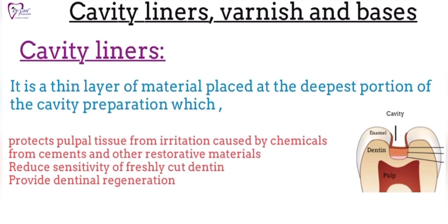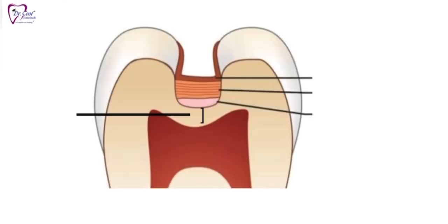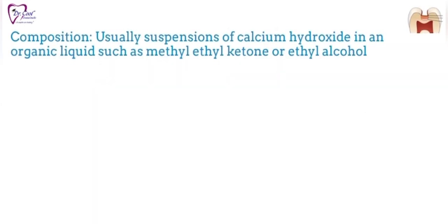The area marked from the deepest point of the cavity to the pulpal floor is RDT — remaining dentinal thickness. If it is less than 0.5 mm, then we apply cavity liners. If it is more than 0.5 mm, we directly go for the base.